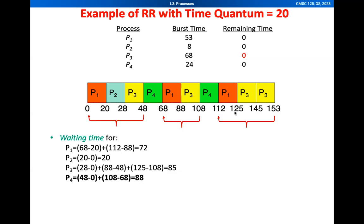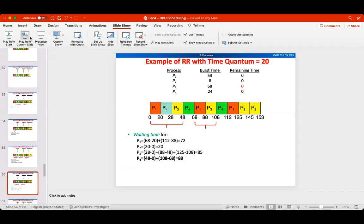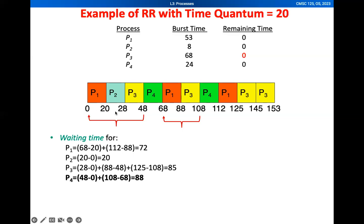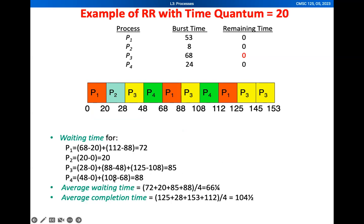For P4, it has to wait for P1 through P3 to execute before it gets its first turn. That is 48 minus zero, plus 108 minus 68, which sums up to 88. To compute the average waiting time, we add all of the waiting times for each process and divide by the total number of processes, which equals 66.25 milliseconds.